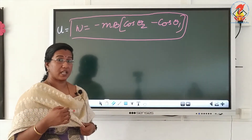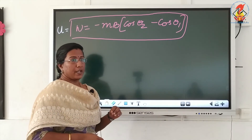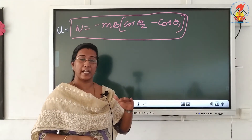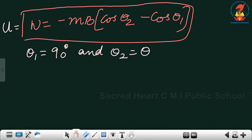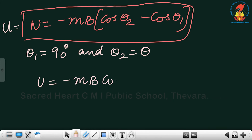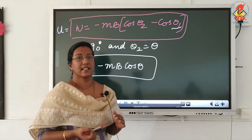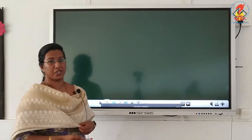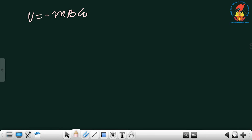Potential energy is minimum when θ = 90°. To find the potential energy for any orientation, we set θ₁ = 90° and θ₂ = θ. The equation becomes U = −MB(cosθ − cos90°) = −MB cosθ, since cos90° = 0. Therefore, the potential energy of a magnetic dipole in an external field is U = −MB cosθ.